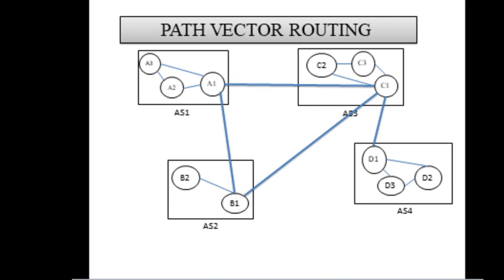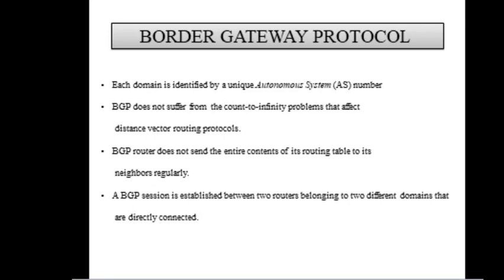This figure shows path vector routing. The principle of path vector routing is similar to that of distance vector routing. In path vector routing, we assume that there is one node in each autonomous system that acts on behalf of the entire autonomous system — called the speaker node. The speaker node creates a routing table and advertises it to speaker nodes in neighboring autonomous systems. Speaker nodes in each autonomous system can communicate with each other. In BGP, each domain is identified by a unique autonomous system number. BGP does not suffer from the count-to-infinity problem that affects distance vector routing protocols. BGP routers do not send the entire contents of their routing table to neighbors regularly. A BGP session is established between two routers belonging to two different domains that are directly connected.